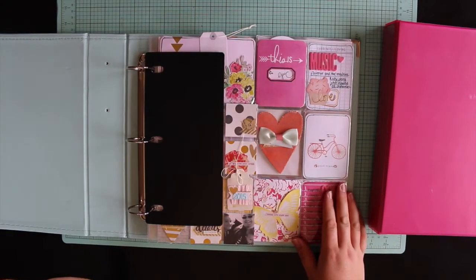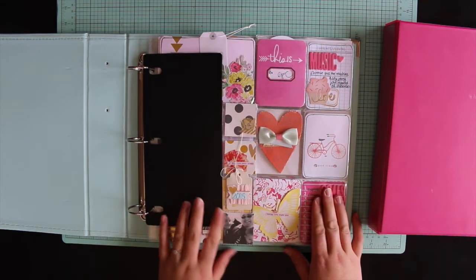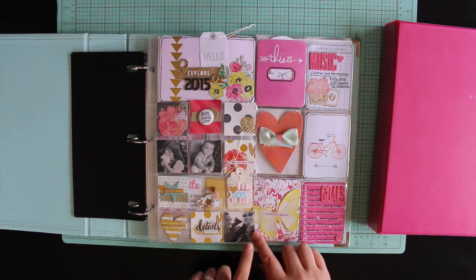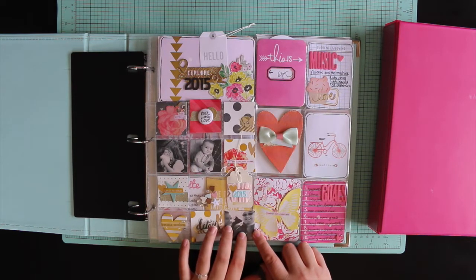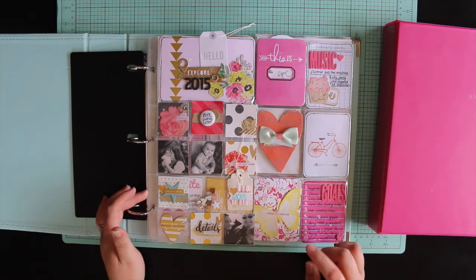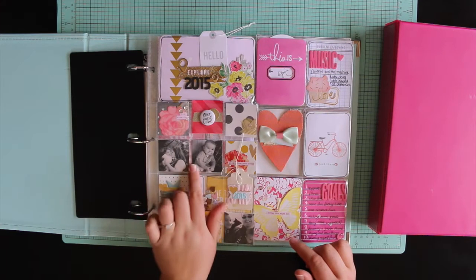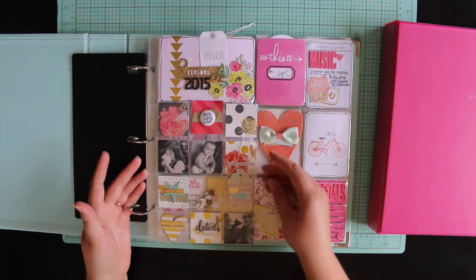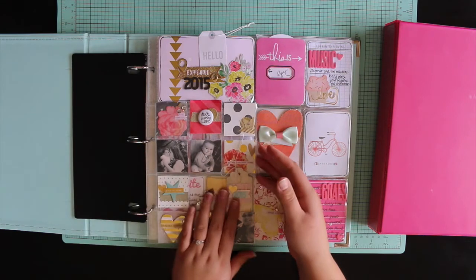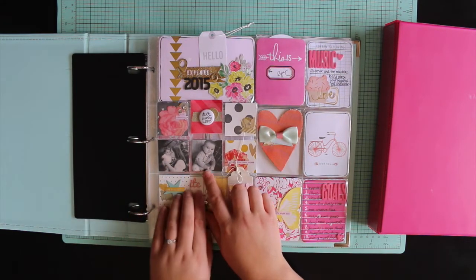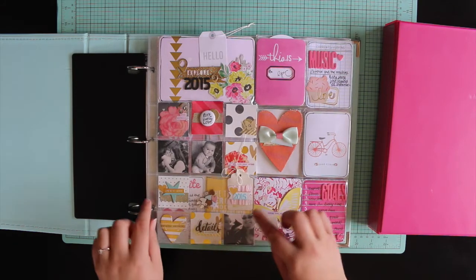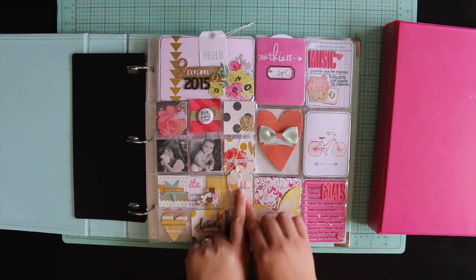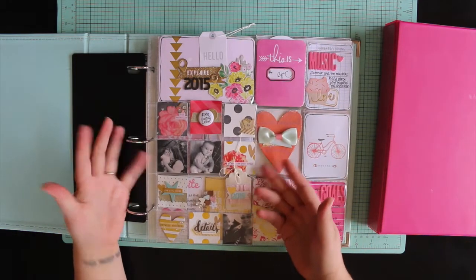So you would have seen some of this already on my YouTube channel because I've done process videos. So basically what I decided to do was I made some little albums in the We Are Memory Keepers 4x4 albums for my mother-in-law and my sister-in-law for Christmas, so I had a lot of extra two by two photos. So what I decided to do was sort of have this as part of the opening of the book and put some of my favorite 2014 photos in. I put a tag with 2015 because I wanted that written somewhere on here because obviously it's the first little bit you see as you open the album.